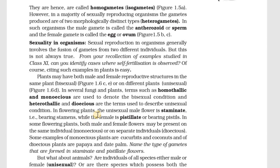In plants, if both male and female reproductive structures are present in the same plant, it is called bisexual. If they are on two different plants, it is called unisexual. When referring to plants with both structures on the same individual, we use the terms homothalic or monoecious.